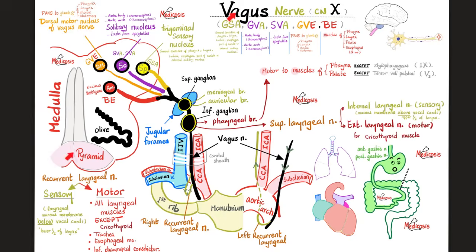Let's talk about the origin of the vagus nerve from the brainstem, particularly the medulla oblongata. The vagus nerve has many nuclei, including the trigeminal sensory nucleus, the solitary nucleus, the dorsal motor nucleus of the vagus nerve, and the nucleus ambiguus. Which one of these controls the baroreceptors and the chemoreceptors in the aortic arch? The answer is the solitary nucleus.